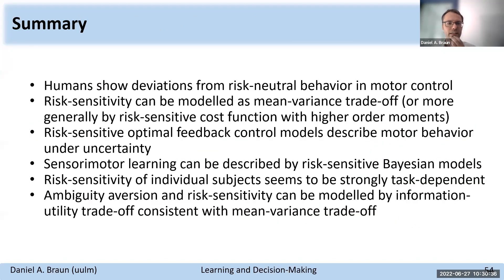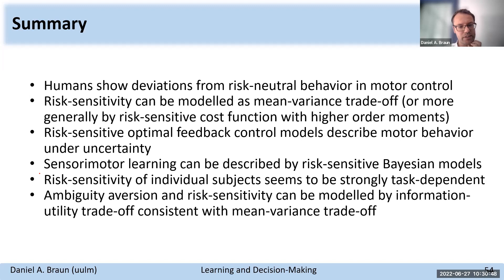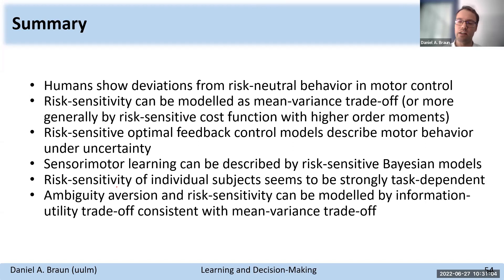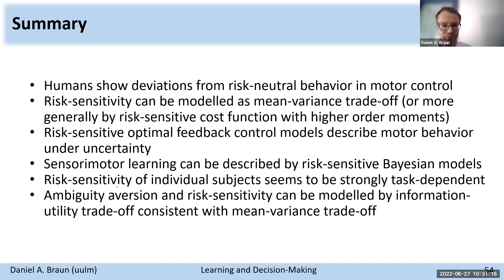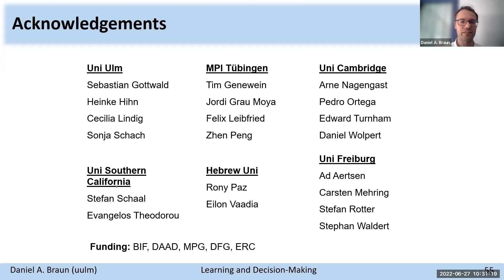To conclude: we show that humans deviate from risk-neutral behavior, which can often be expressed as a mean-variance tradeoff. Risk-sensitive optimal control models capture behavior quite well, including cases of model misspecification. One issue is that when you extract risk-sensitivity or ambiguity-sensitivity parameters from individuals, generalization across different tasks tends to be quite poor — which is also what other groups have found. Thanks for listening.